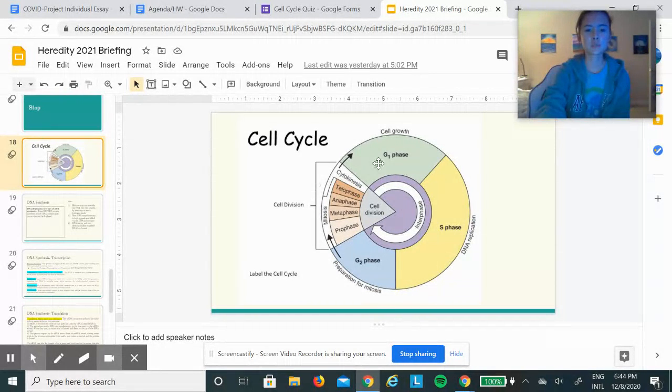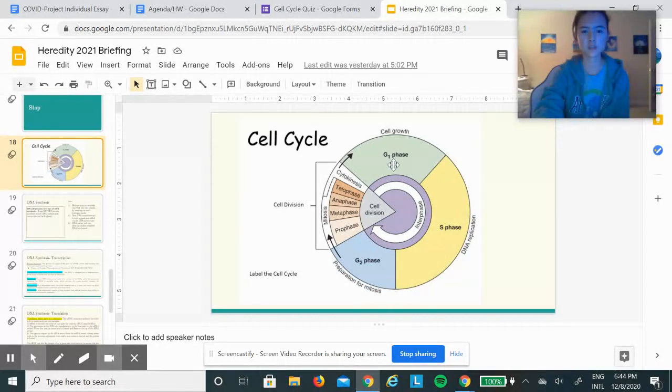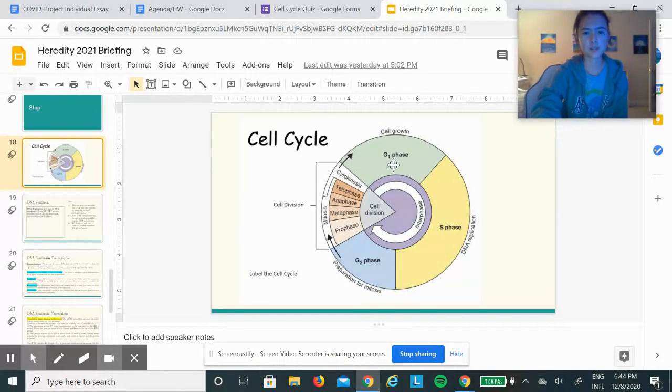First, the cell cycle. There are three parts: interphase, mitosis, and cytokinesis. Interphase consists of cell growth (the G1 phase), DNA replication (the S phase), and preparation for mitosis (the G2 phase).